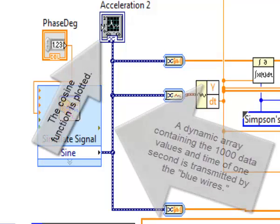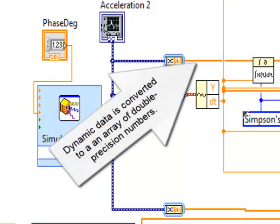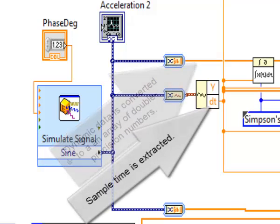The cosine function is plotted. Dynamic data is converted into an array of double precision numbers. Sample time is extracted.